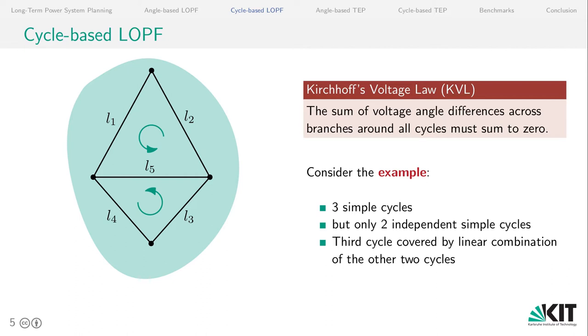But the cycles are not all independent. We only have two independent simple cycles. And the third can be covered by a linear combination of the two other cycles. And we would consider the two cycles, which are marked here, a cycle basis of the network graph, meaning that we can construct all other simple cycles by a combination of the two.